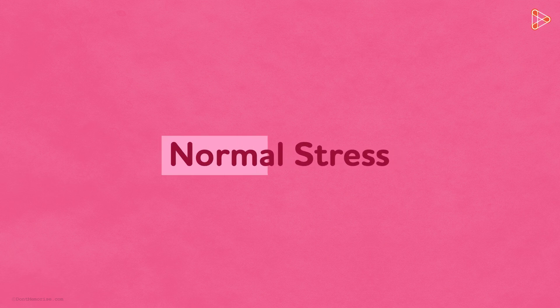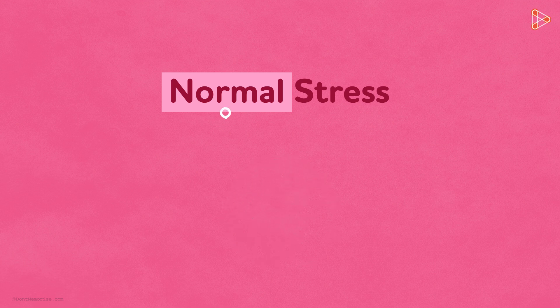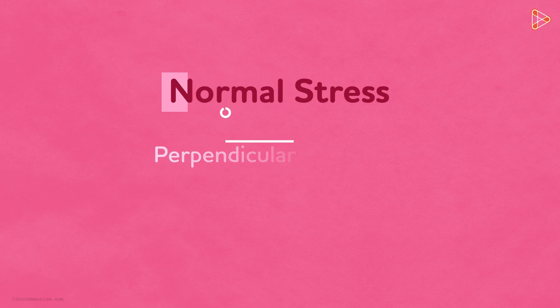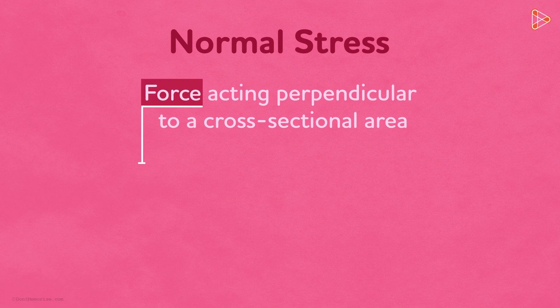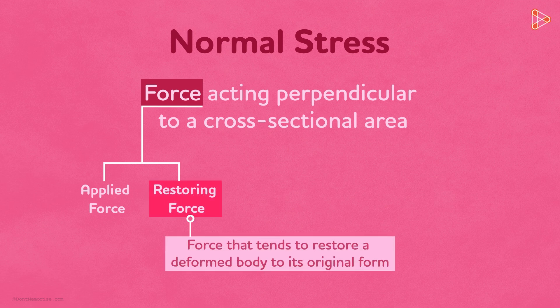When you see the word normal in math or physics, what is it that you think of? The word normal in mathematics means perpendicular. So normal stress is simply the force acting perpendicular to a cross-sectional area. It is important to note that the same applies to the restoring force and the applied force. Restoring force is simply a force that tends to restore a deformed body to its original form — that also is perpendicular.